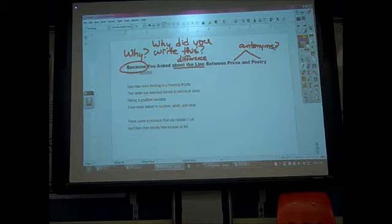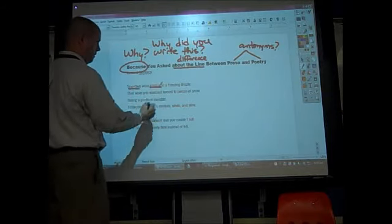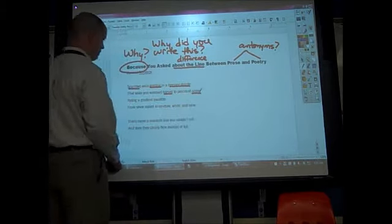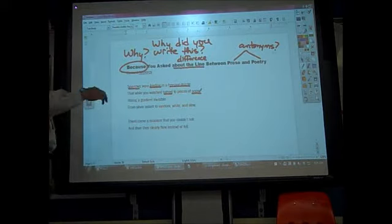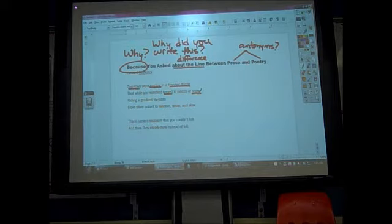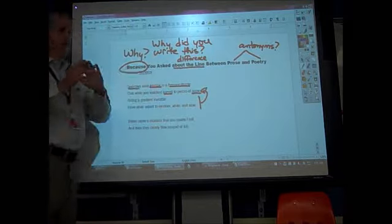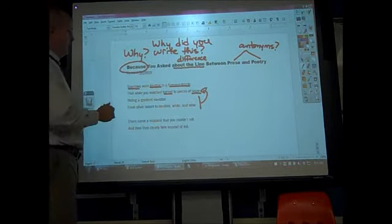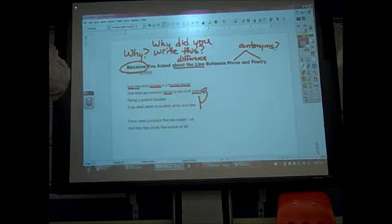So the first thing I'm going to do is try to figure out what the heck is just actually happening in this poem. So I look and I see that we have sparrows and they're feeding, there's a rain, and I see that it turns to snow. And then as I look at this, writing a gradient invisible from silver and slant to random white and slow, I realize that all of this is just describing that process of turning into snow. So in this first stanza, all that's happening is sparrows are eating, there's a freezing rain coming down, and while I watch it all, it turns to snow.